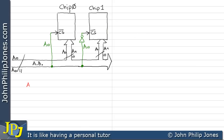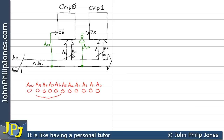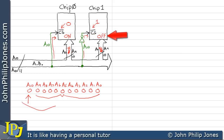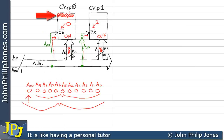Consider the address lines A0 through to A10. Sending the binary pattern of all 0s on the address bus: these 10 lines go to each memory chip, while A10 goes to the chip select of chip 0 and to the chip select of chip 1 via the NOT gate — making that a 1, so chip 0 is on and chip 1 is off. All 11 lines have selected the first location in chip 0.